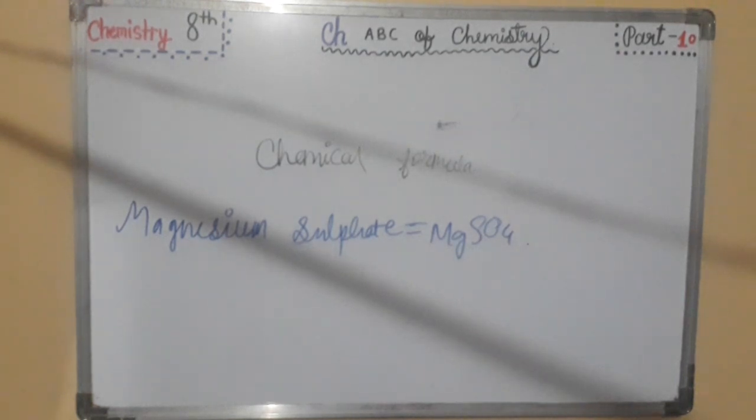What does a chemical formula convey? The chemical formula gives information about a compound. First point is, the different types of elements involved in it. Second point is, the number of atoms of different elements in it.